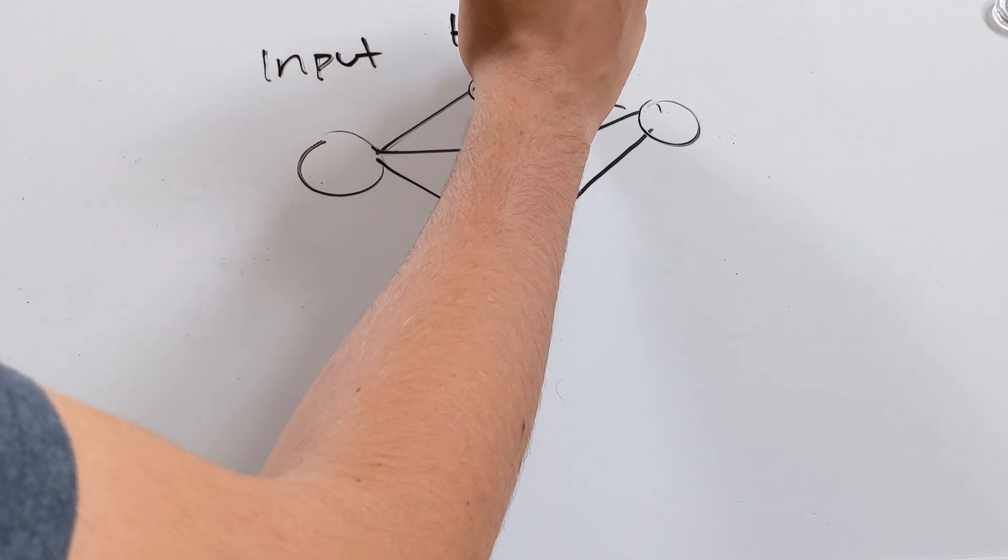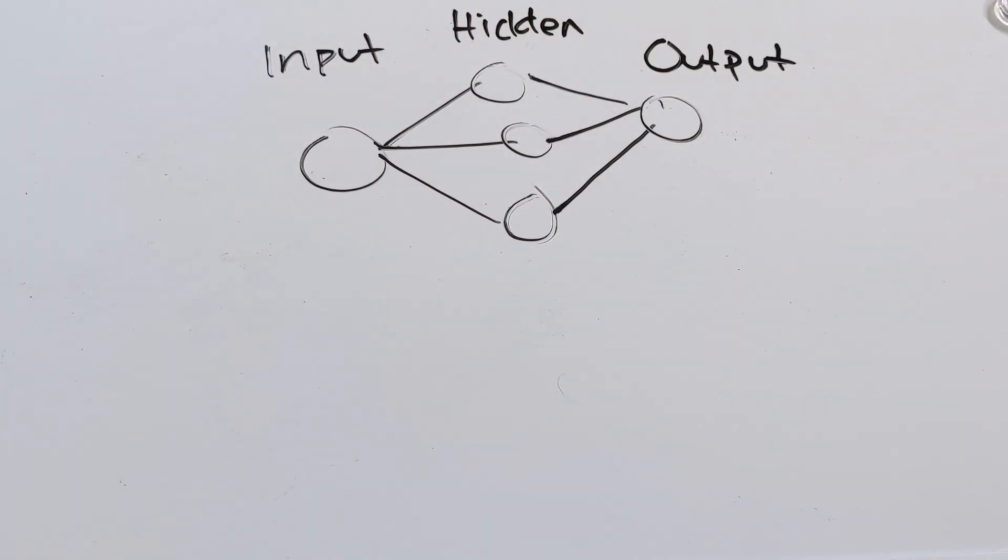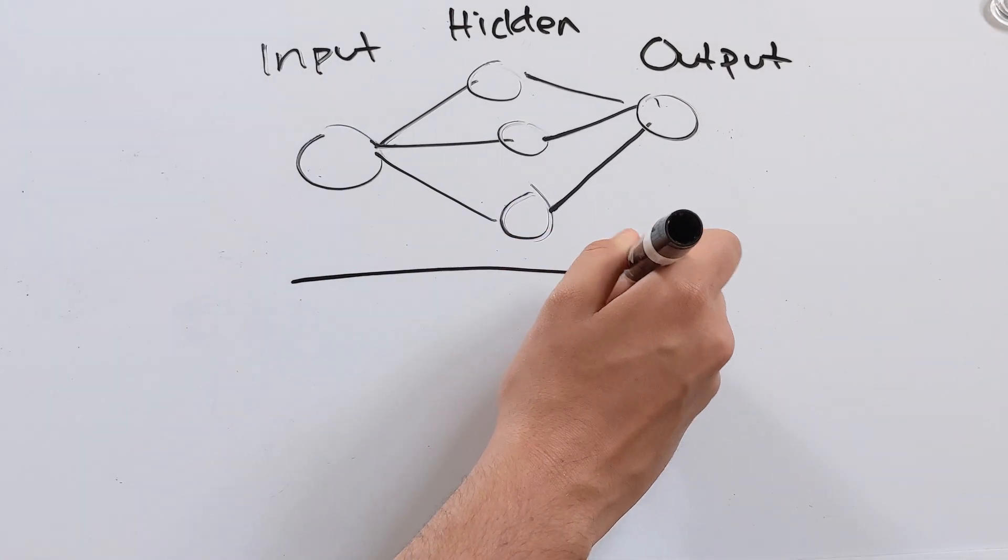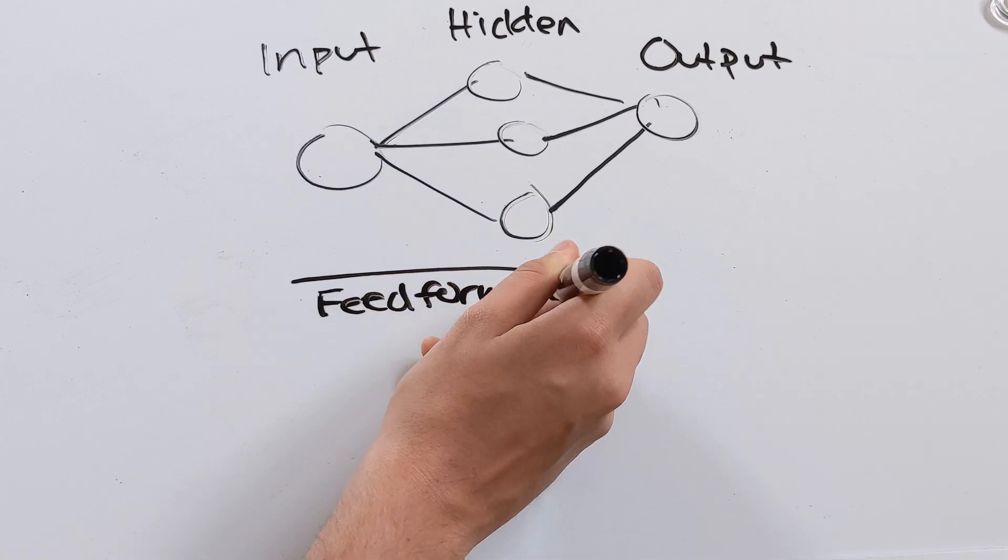So a neural network is split up into three basic parts. We have our input layer, our hidden layer, and our output layer. And it's usually feed-forward, meaning that the inputs and the outputs are directly connected in a feed-forward manner.